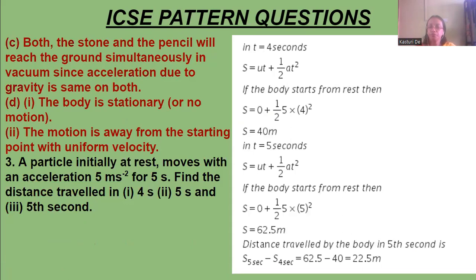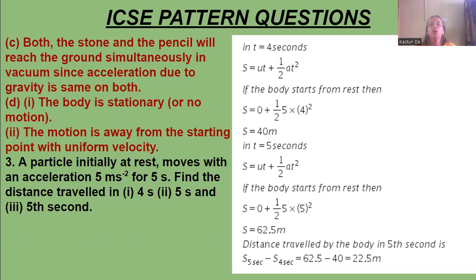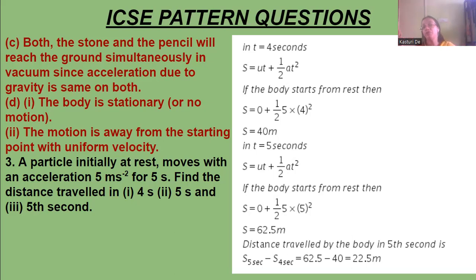The question was: if a stone and a pencil are dropped simultaneously in vacuum from the top of a tower, which one will reach the ground first? In vacuum, both the stone and the pencil will reach the ground simultaneously, since the acceleration due to gravity is the same on both. Acceleration due to gravity does not depend on the mass of the body. The pull — the acceleration due to gravity — is the same, so they will reach the ground simultaneously.